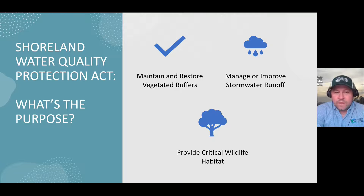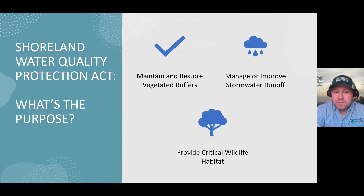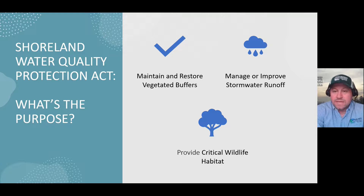What is the Shoreland Water Quality Protection Act? Its main purpose is threefold: to maintain and restore vegetated buffers, to manage or improve stormwater runoff, and to provide critical wildlife habitat. If you'd like to read more specifics into the state statute or rule, that's available under RSA 483B or the rule is ENV-WQ 1400.